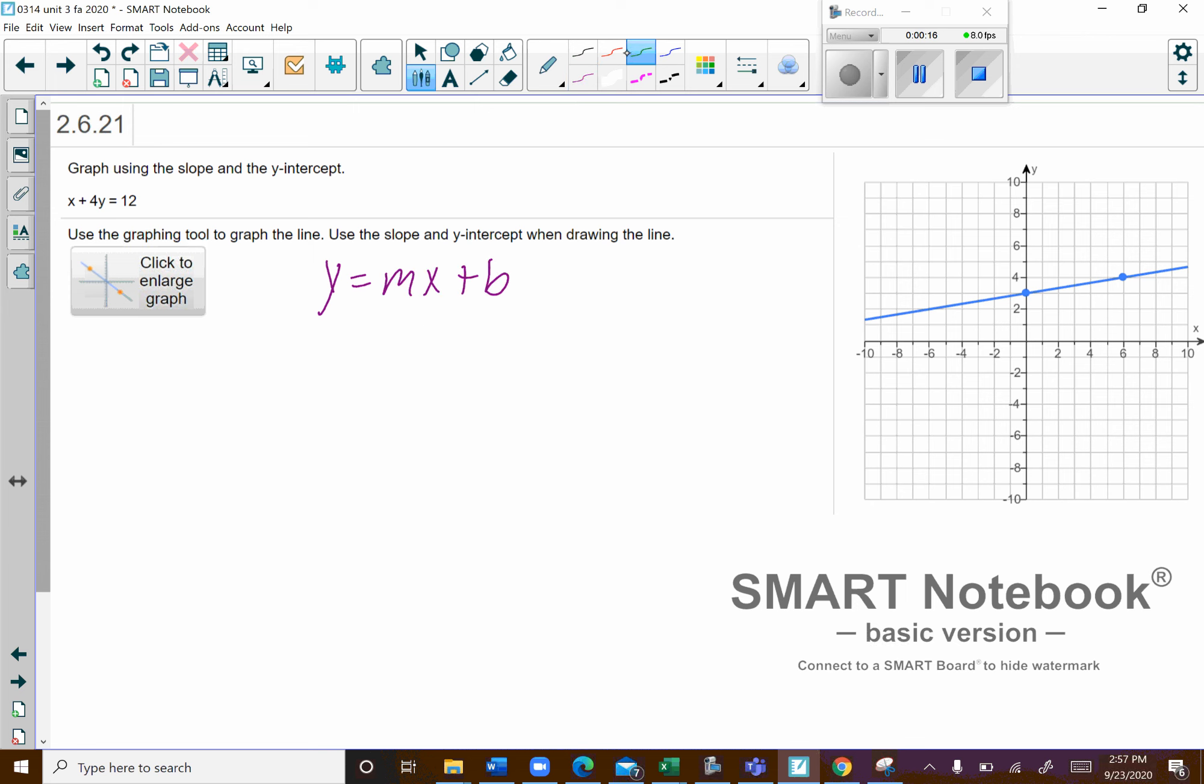So what we'll start off by doing is subtracting x from both sides. That'll leave us with 4y equals 12 minus x. But I prefer to go ahead and swap that and put the minus x first, and then that positive 12, we'll put it as a plus 12. That's how I like to do it.